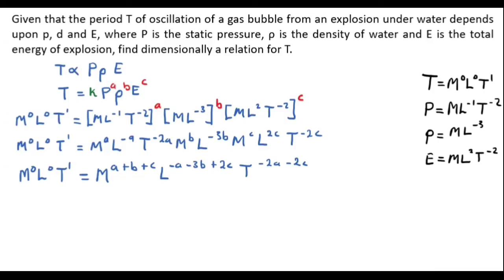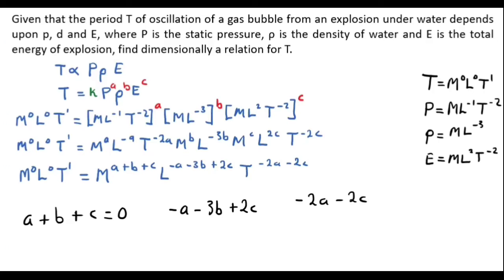Comparing powers of M: A + B + C = 0 (equation 1). Powers of L: -A - 3B + 2C = 0 (equation 2). Powers of T: -2A - 2C = 1 (equation 3). So we have three equations — equation 1, equation 2, and equation 3 — and we'll solve them to find A, B, and C.